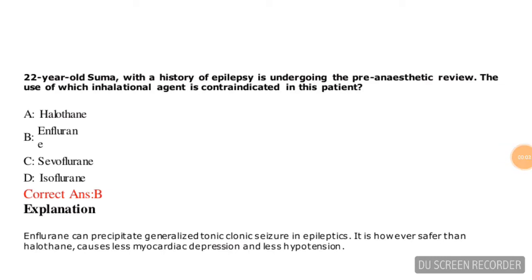Hello friends, today we are going to discuss questions on epilepsy. Question number one: a 22-year-old patient with history of epilepsy is undergoing pre-anesthetic review. The use of which inhalation agent is contraindicated in this patient? Options are halothane, enflurane, sevoflurane, isoflurane. The correct answer is enflurane, so option B is correct.